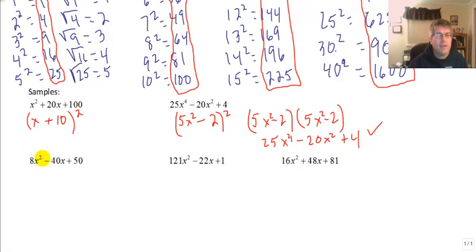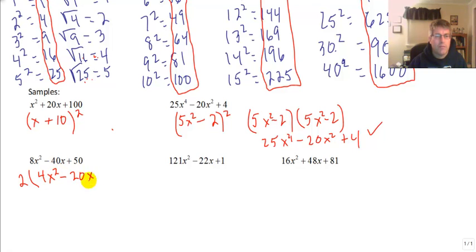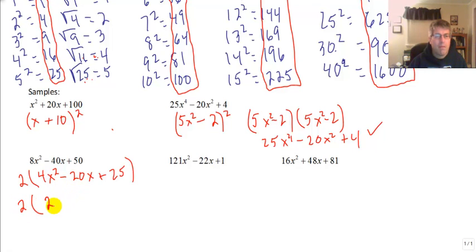Sample problem 3: 8x squared minus 40x plus 50. This follows our first rule of factoring — there is a greatest common factor of 2. We factor out the 2 to get 2 times the quantity 4x squared minus 20x plus 25. Now 4 is a perfect square and 25 is a perfect square, so this looks like a perfect square trinomial. The square root of 4 is 2, the square root of 25 is 5, and 2 times 5 times 2 is 20, matching the middle term. So this factors to 2 times the quantity 2x minus 5 squared.